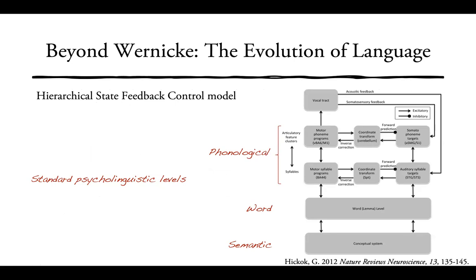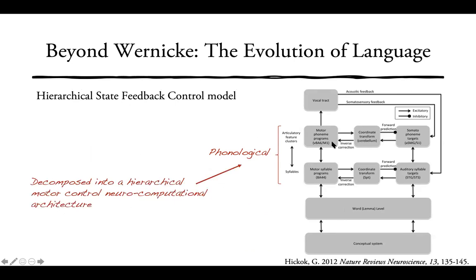This idea has been extended in what I've called the Hierarchical State Feedback Control model. It elaborates on the previous model and features standard psycholinguistic levels — semantic, word level, and phonological — but the phonological level is decomposed into a hierarchy of motor control-like neurocomputational circuits. There is an auditory-motor circuit mediated by SPT, a somatosensory circuit mediated by the cerebellum connected to lower-level motor programs. This constellation is the neural realization of what we call phonology.